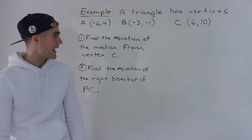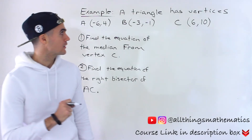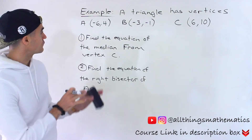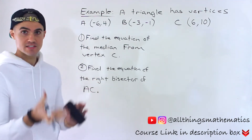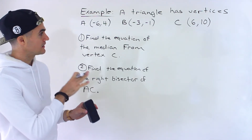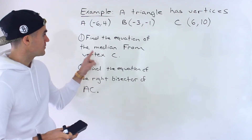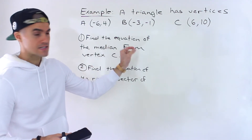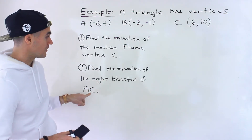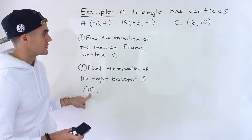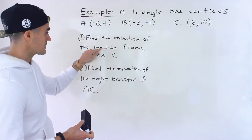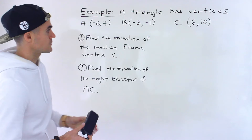What's up everyone? Patrick here. Welcome back. In this next question we are given a triangle that has these vertices: vertex A has coordinates negative 6 and 4, vertex B negative 3 and negative 1, and then C has 6 and 10. Given this triangle we have to find the equation of the median from vertex C, and then we have to find the equation of the right bisector of AC. Sometimes you'll be given a question like this where you have to mix up these different lines, like a median and a right bisector, with the same triangle.